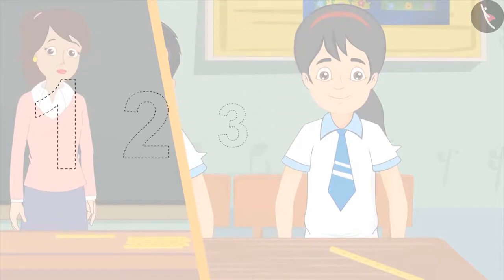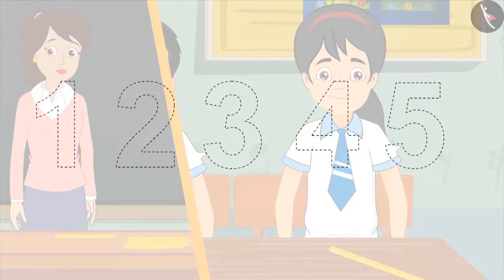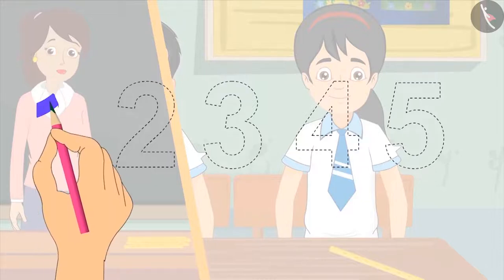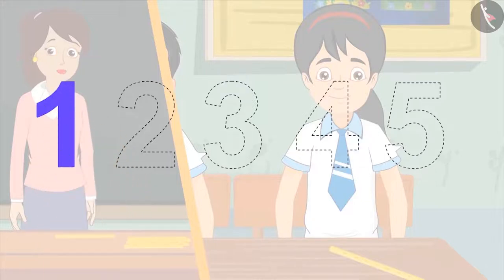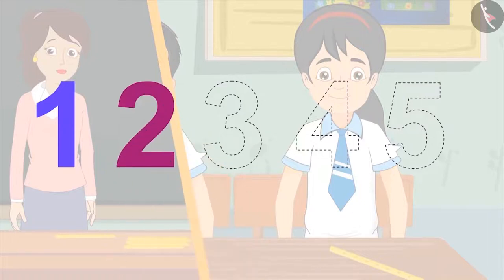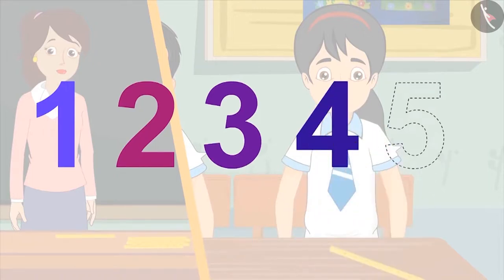You have seen how you can write each number as a special symbol. Let us learn to write these symbols. We write 1 like this, 2 like this, 3 like this, 4 like this, and 5 like this. All of you must practice writing these symbols.